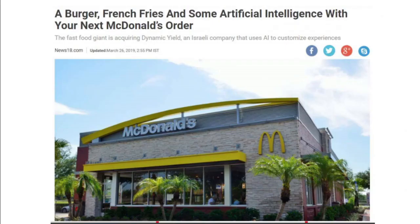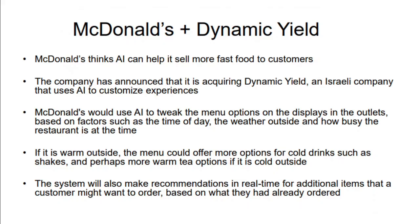Let me give one more example implemented by McDonald's, the biggest burger chain. They've partnered with a company called Dynamic Yield that can automatically tweak menu options based on factors such as the time of day, the weather outside, or how busy the restaurant is. For example, during a rainy season it will automatically show hot items like warm tea or coffee, and if there is scorching heat outside it will show cold drinks on the menu.